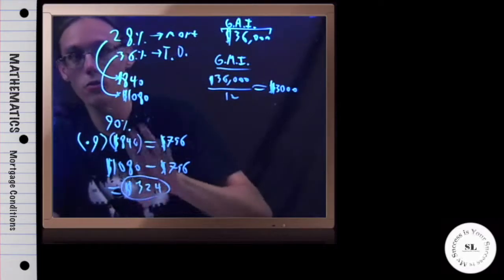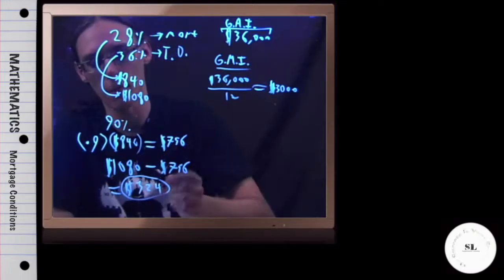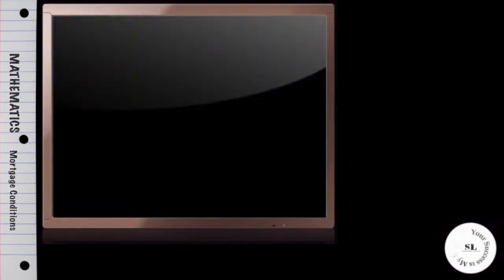Now the total we should be paying for all debt altogether is $1,080. So to find out how much is left over for our other debts, like credit cards, etc., we're just going to subtract. We paid $756 on the mortgage out of the $1,080 we should be paying altogether.